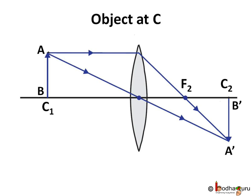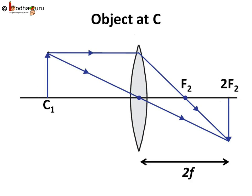The image is at the center of curvature C2. Now, radius of curvature is twice the focal length, so C2 equals 2F2. C2 is situated at double the focal length distance. So if you measure the distance in terms of focal length, the object is at 2f distance and the image is also at 2f distance.